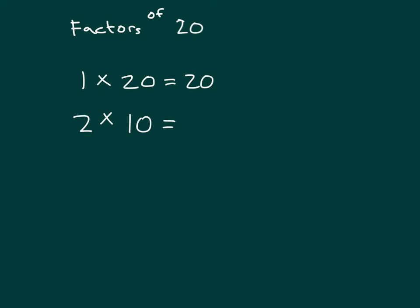Equals 20. Can we go 3? Hmm, I don't think so. We can go 4 though. 4 times what? 4 times 5 equals 20. We can't go 6. We can't get to 7. There's no number times 7 that would give us 20.